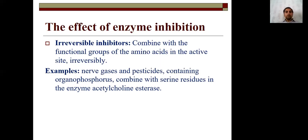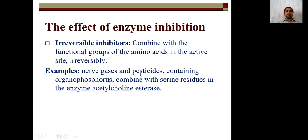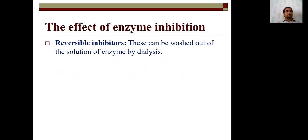For example, nerve gases and pesticides containing organophosphorus combine with the serine residue of the enzyme acetylcholinesterase, permanently blocking the transmission of nerve impulses. Ultimately the organism dies because the nervous system is blocked by this poison. These organophosphorus-containing nerve gases and pesticides block the active sites of acetylcholinesterase — that is why they are irreversible inhibitors.